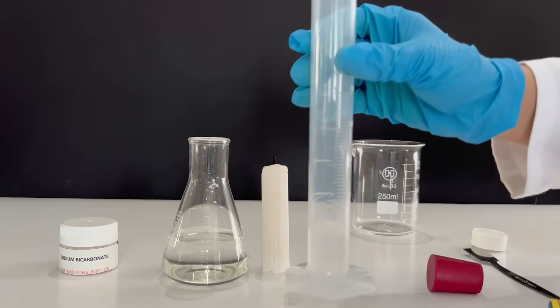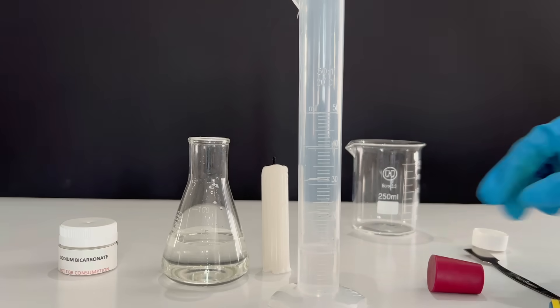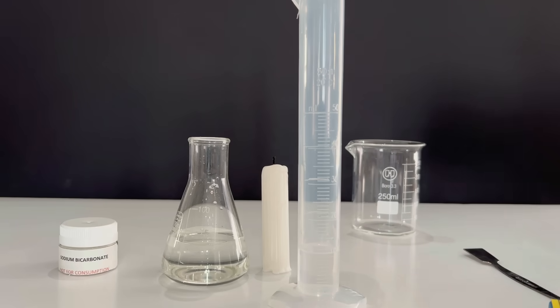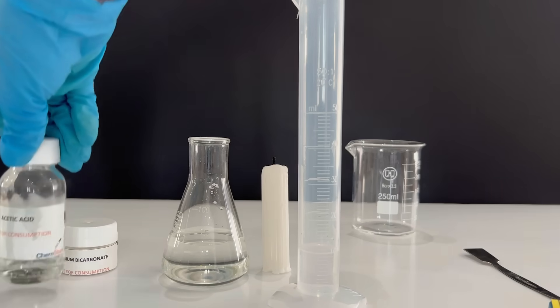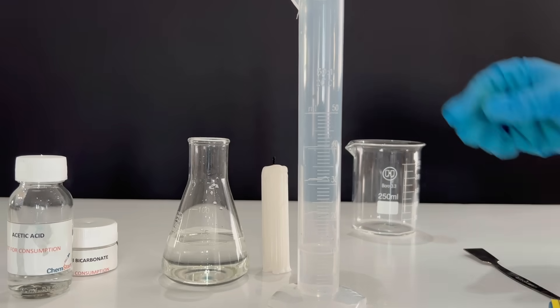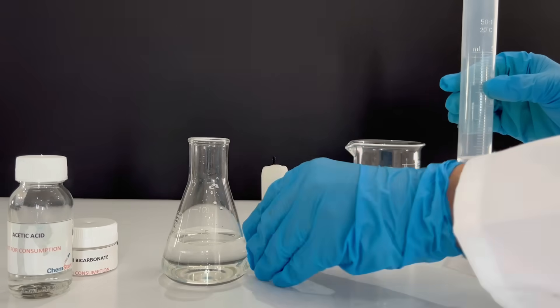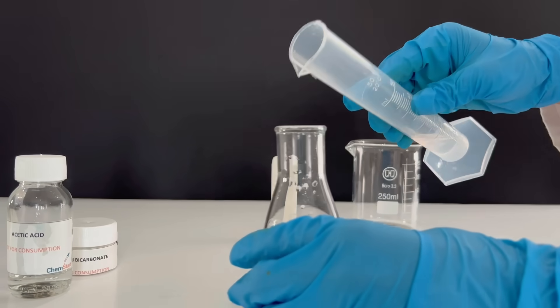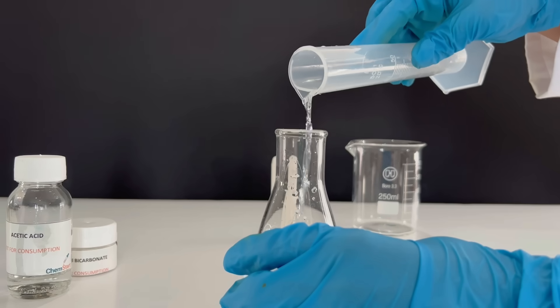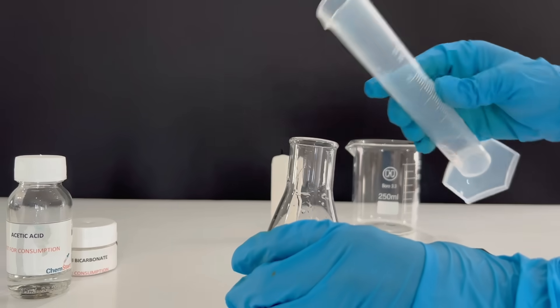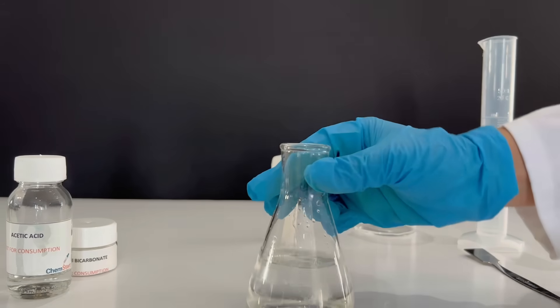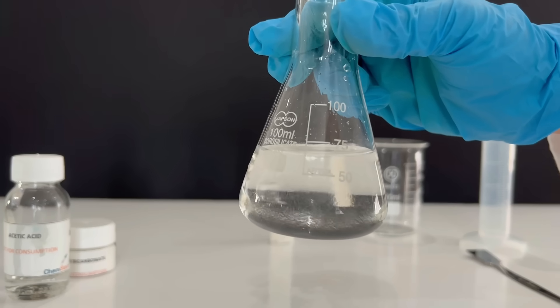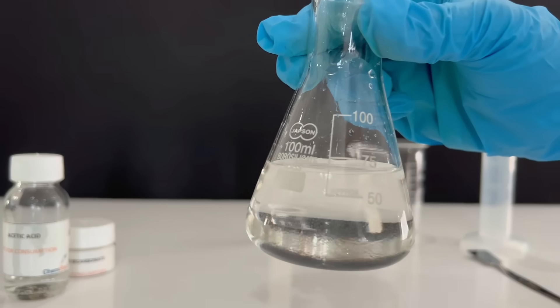Now that we have 10 milliliters measured out in our measuring cylinder, we can add it to the Erlenmeyer flask that is filled with water. Take note of the reaction happening. Do you see? You can see that it's reacting.